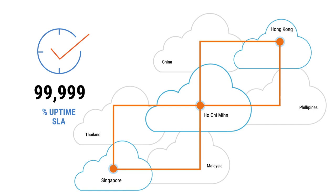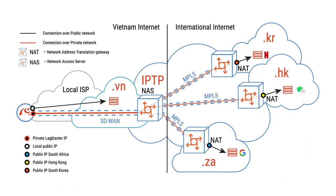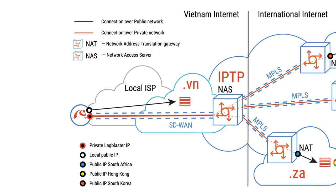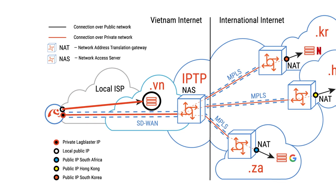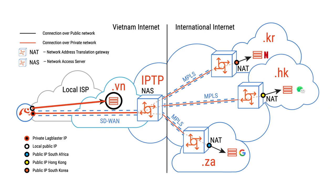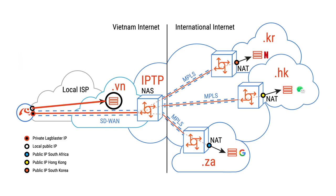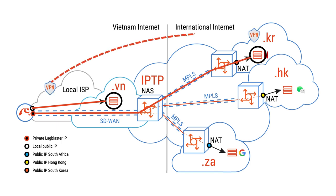Local traffic is offloaded by bypassing distant routes, so Lag Blaster maintains network performance when connecting to servers in your own country. Lag Blaster relies on only a short segment of the domestic internet, while the majority of connection paths are on clean, low-latency MPLS — unlike VPN, which relies fully on the internet and may be affected by congestion and high latency from users' devices to VPN servers.